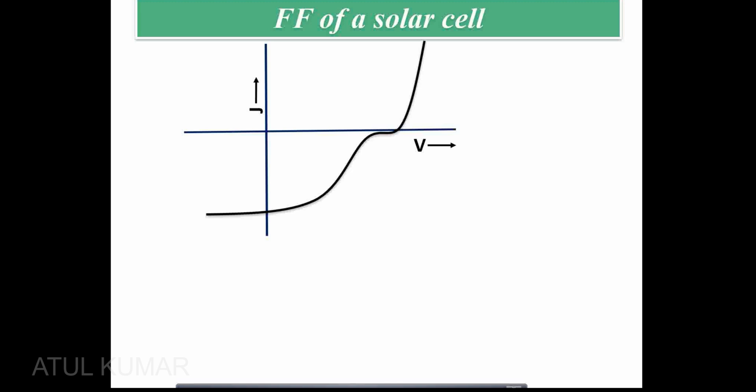Basically, the area under these two curves is different. For a good solar cell, the IV or JV curve is more closer to a square or rectangle. That means the exponentiality is lower in this IV curve — not ideal, but a good solar cell.